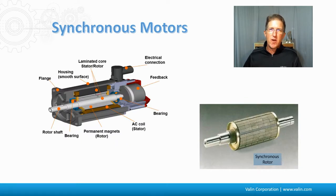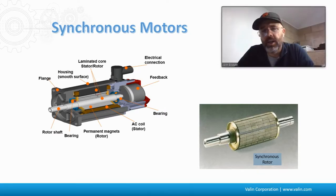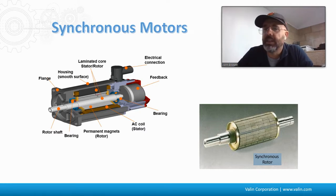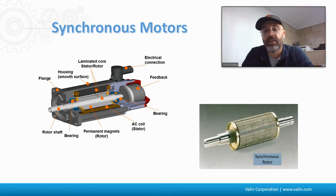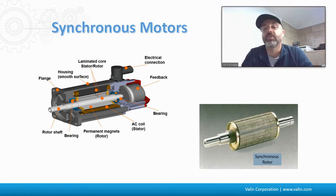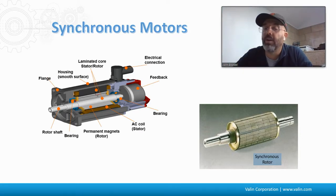If you look at the construction, it looks quite a bit different than the AC induction motor. On a synchronous motor, you will always have feedback because you need to know where the actual magnets are — they're alternating north-south, north-south around the rotor, as you can see in the diagram. The coils react against those magnets and are able to spin the rotor by alternating. Without the feedback on the device, you wouldn't know where you are to turn the right coil on or off, and you can end up with the system fighting itself.